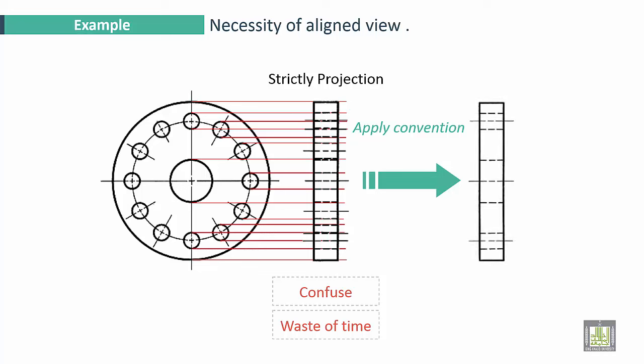We can confuse now. This representation is not good. If we apply the convention now, the view will become like this. It becomes clear. We have one hole here, the big hole here, and the other hole here.